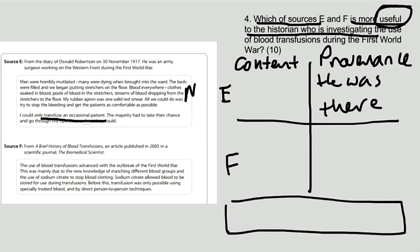Let's have a look at source F, from 'A Brief History of Blood Transfusion,' an article published in 2005 in the scientific journal The Biomedical Scientist. Now do not under any circumstances say 'Oh look, it's 2005, it's a secondary source, they weren't there, what do they know?'—because that's nonsense.